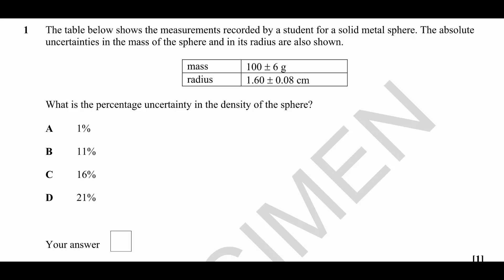Well, the first thing we need to know here is how to calculate the density of any object. The density is calculated as density ρ equals mass divided by volume. So we need to know the mass and the volume.